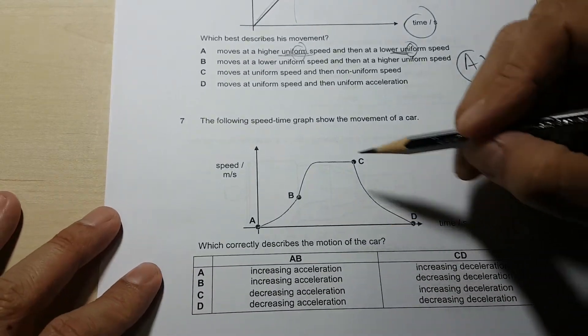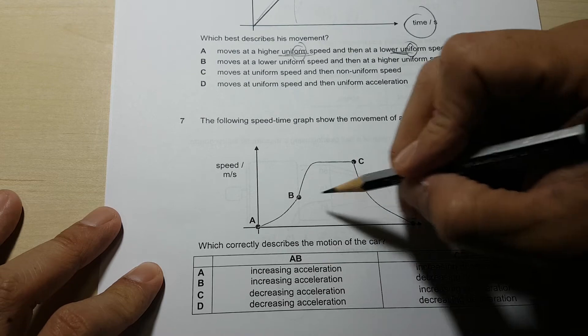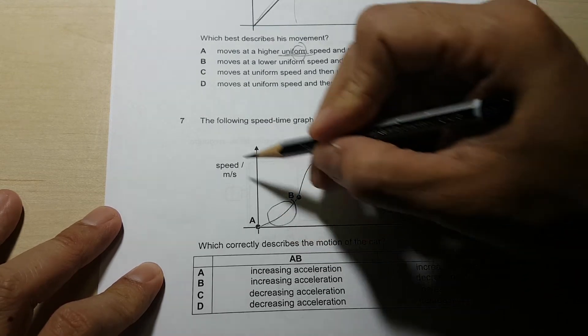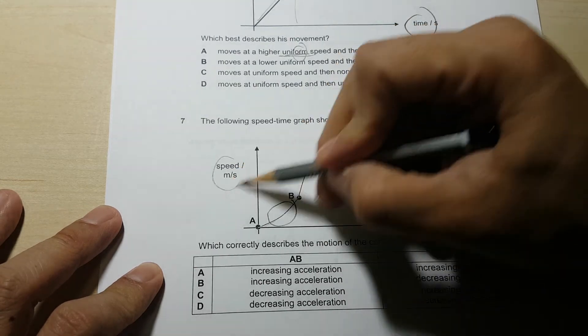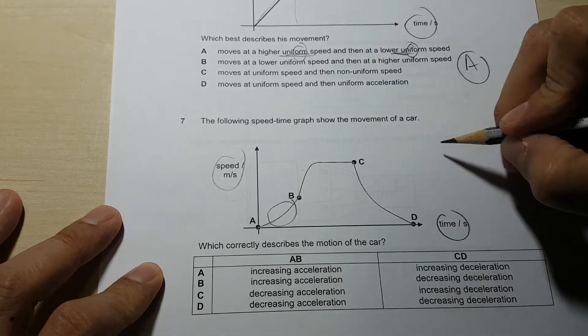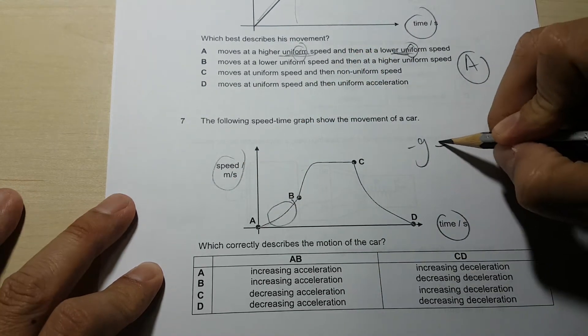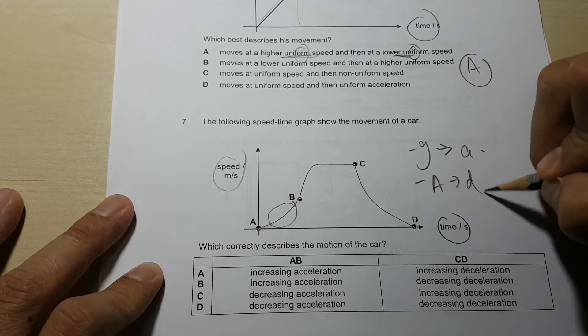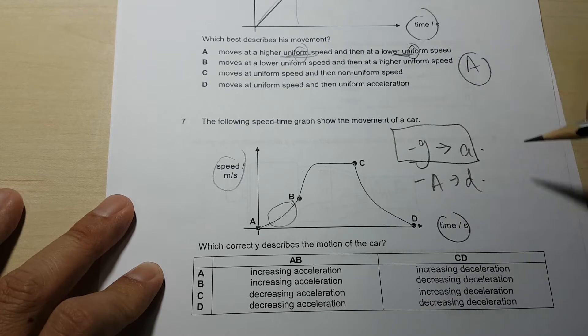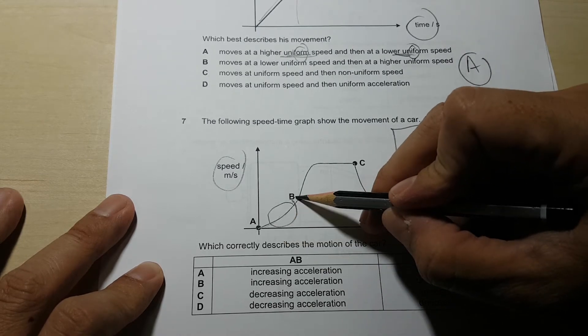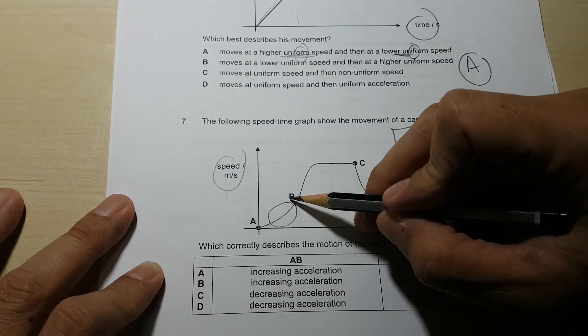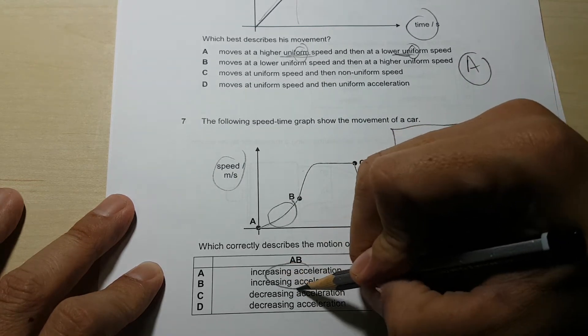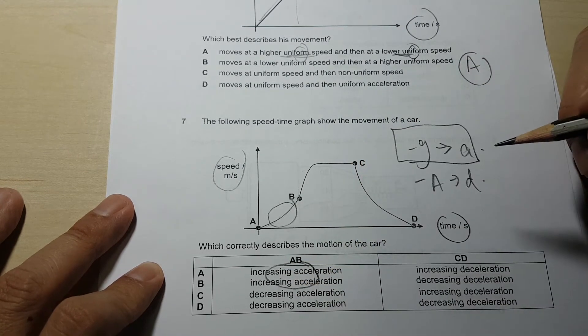Question 7. Which correctly describes the motion of the car? Speed-time graph. Two things you can tell. First thing, gradient gives me acceleration and area under the graph gives me distance. So in this case, I'm interested in this. The gradient here, increasing gradient, so must be increasing acceleration. So increasing acceleration only A or B is able to.